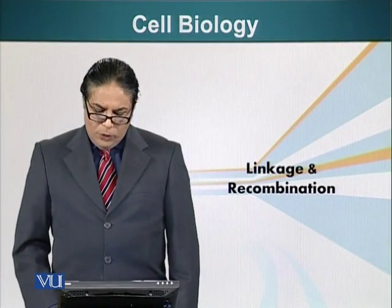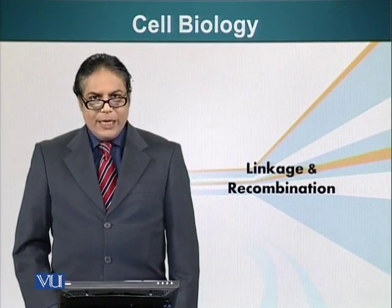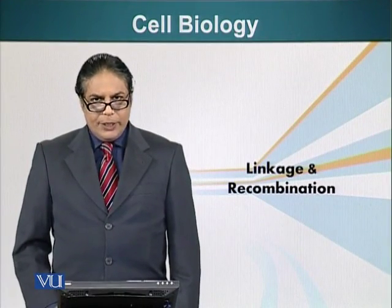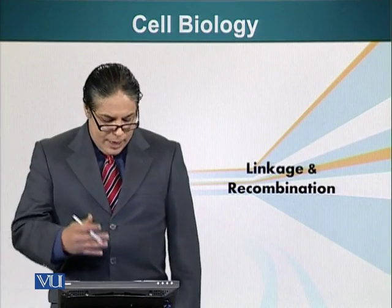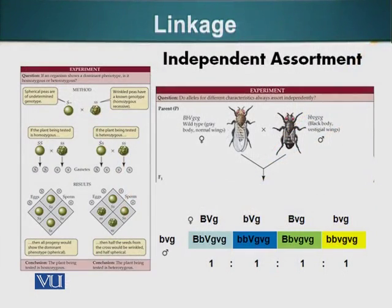In this module, we will talk about linkage and recombination. Another scientist by the name of Thomas Hunt Morgan was doing experiments on fruit flies. He was looking at transmission of genes from one generation to the next. I will give you an example of one of his experiments.